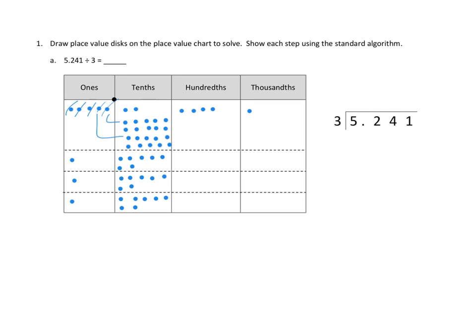We cross out twenty-one of our tenths. Again, we have just one little dot remaining that we weren't able to divide equally, so we're going to decompose that one tenth into ten of the next smaller units — ten hundredths — and we are done with all of our tenths.